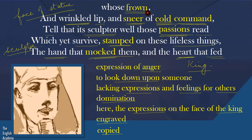The hand that mocked them refers to the hand of the sculptor which copied the expressions onto the statue. The heart that fed refers to the heart of King Ozymandias which produced these expressions. So the sculptor analysed the king's expressions very well and copied them exactly onto the statue.